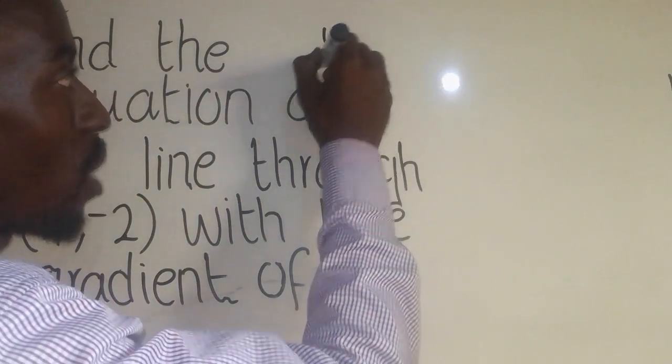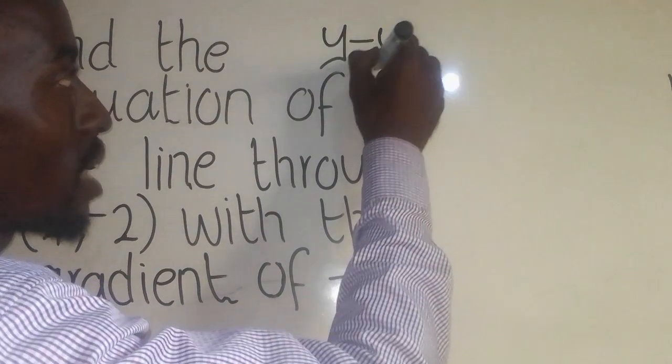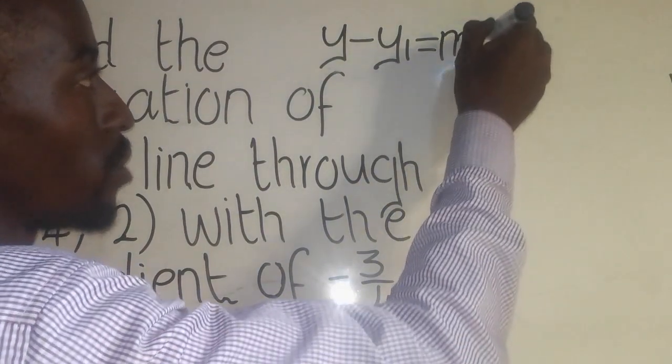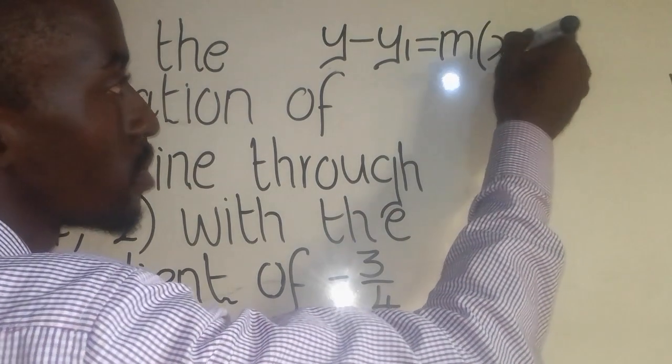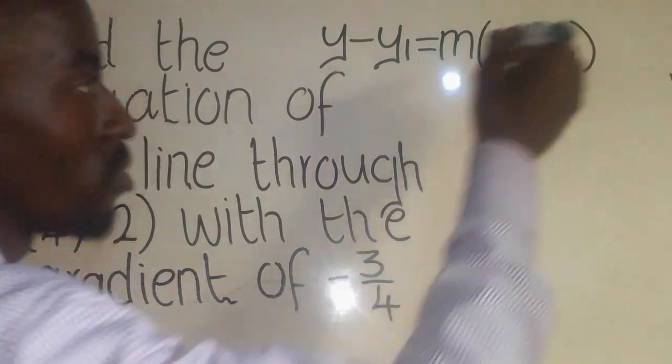You say y minus y1 equal to m, open bracket, x minus x1 there.